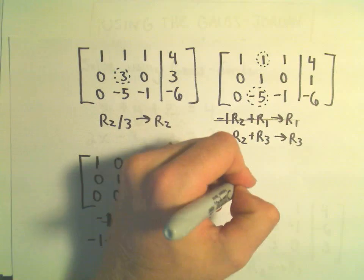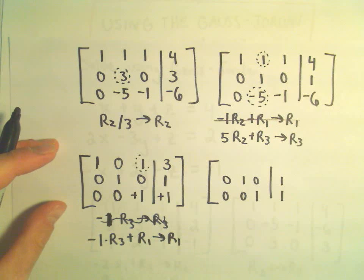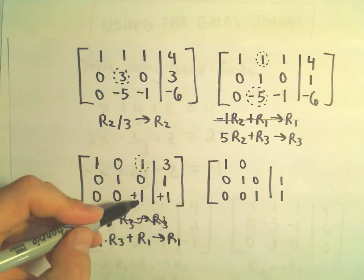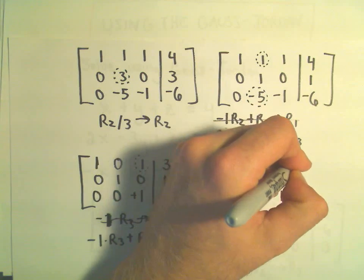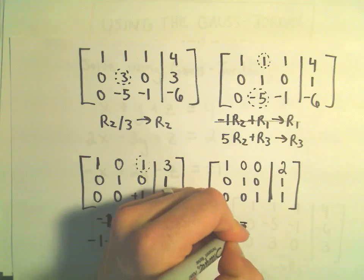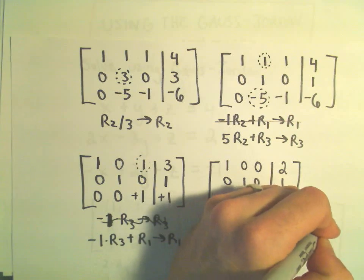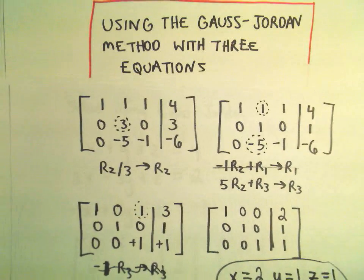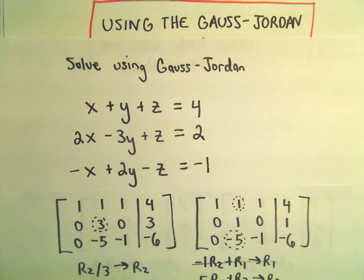The second and third rows stay as they were. Taking negative 1 times row 3 added to row 1: 0 plus 1 is 1, 0 plus 0 is 0, negative 1 plus 1 is 0, and negative 1 plus 3 is positive 2. Now we have our solution: x equals 2, y equals 1, and z equals 1. You can always go back and check by plugging x equals 2, y equals 1, and z equals 1 into the original system of equations to verify it produces a valid solution.